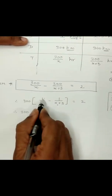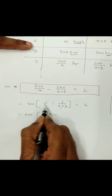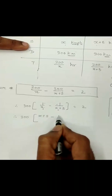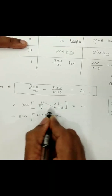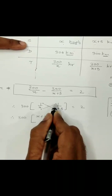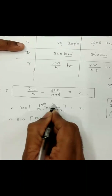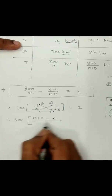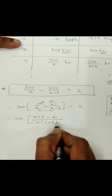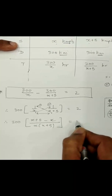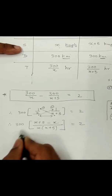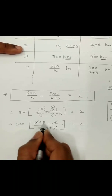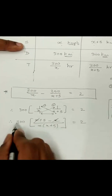So step 1 gives x plus 5 times 1, which is x plus 5. Step 2 is the numerator of the second times the denominator of the first, giving 1 times x, which is x. Step 3 is denominator times denominator: x into x plus 5. So after cancellation, x and x cancel out, leaving 300 into 5.